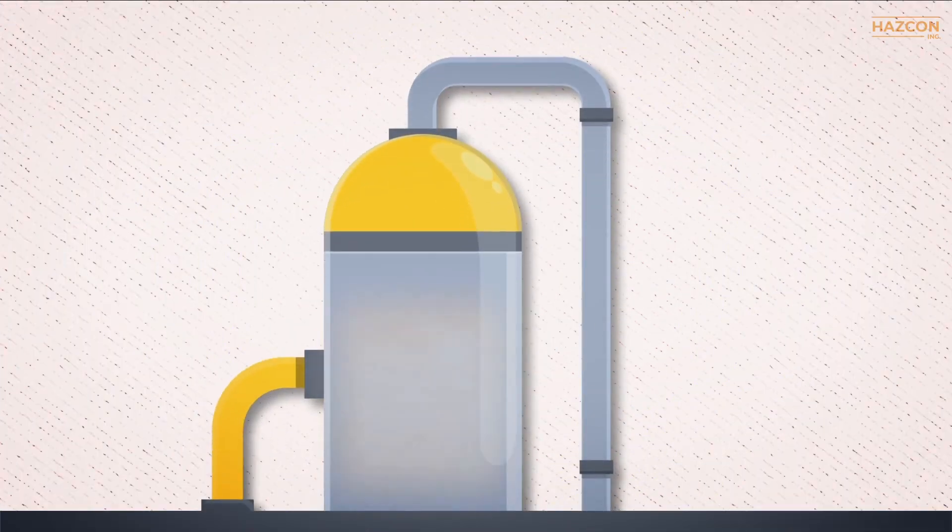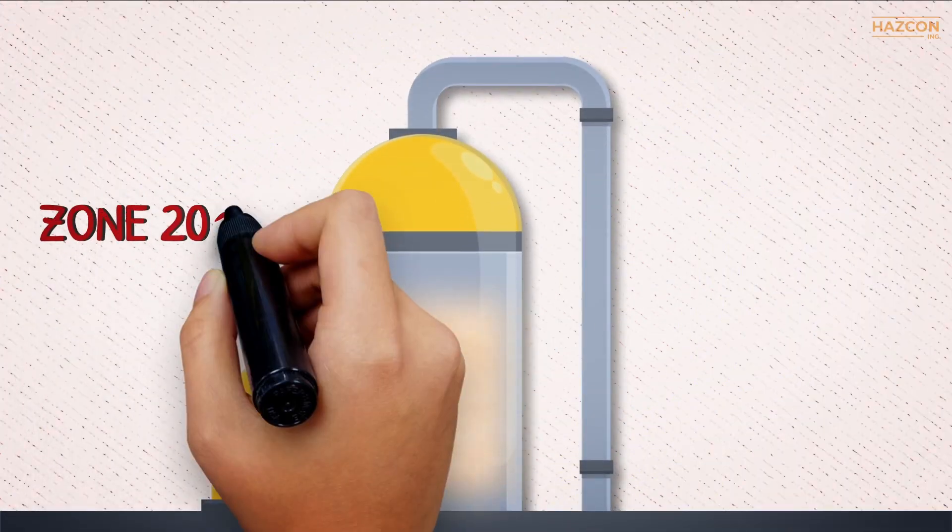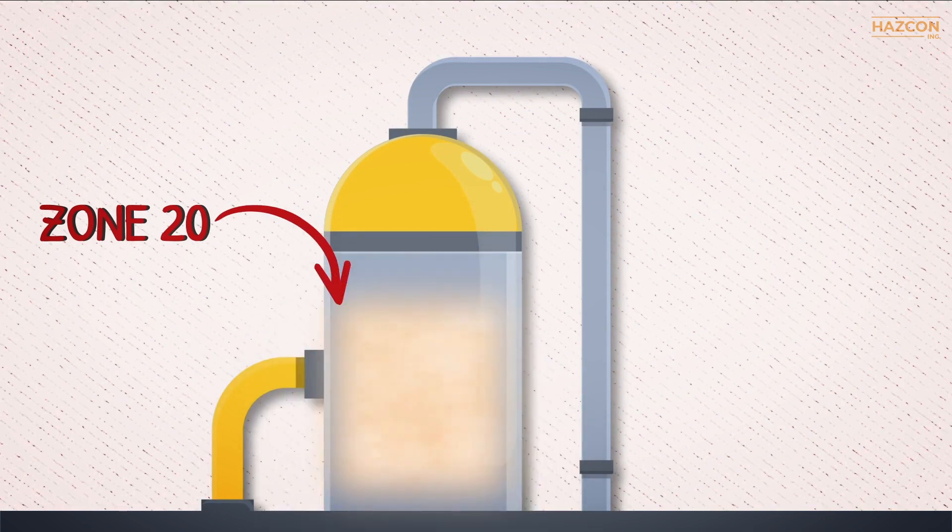Zone 20 is defined as an area in which an explosive dust atmosphere, in the form of a cloud of dust in the air, is always present during normal operation.